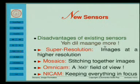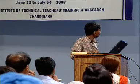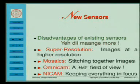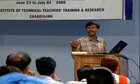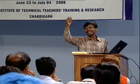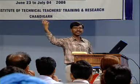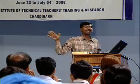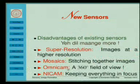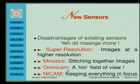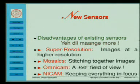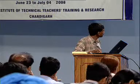These are the four things I am going to talk about today. One is super resolution — getting images at a higher resolution than the original. Then mosaics — stitching images together. Nowadays we have digital cameras that come with a panorama mode, which automatically tries to stitch images all around into one combined image. Then there is an omni cam — an omnidirectional camera with a 360 degree field of view. And finally, a non-frontal imaging camera which has every pixel equally focused. Let us come to the first one: super resolution.